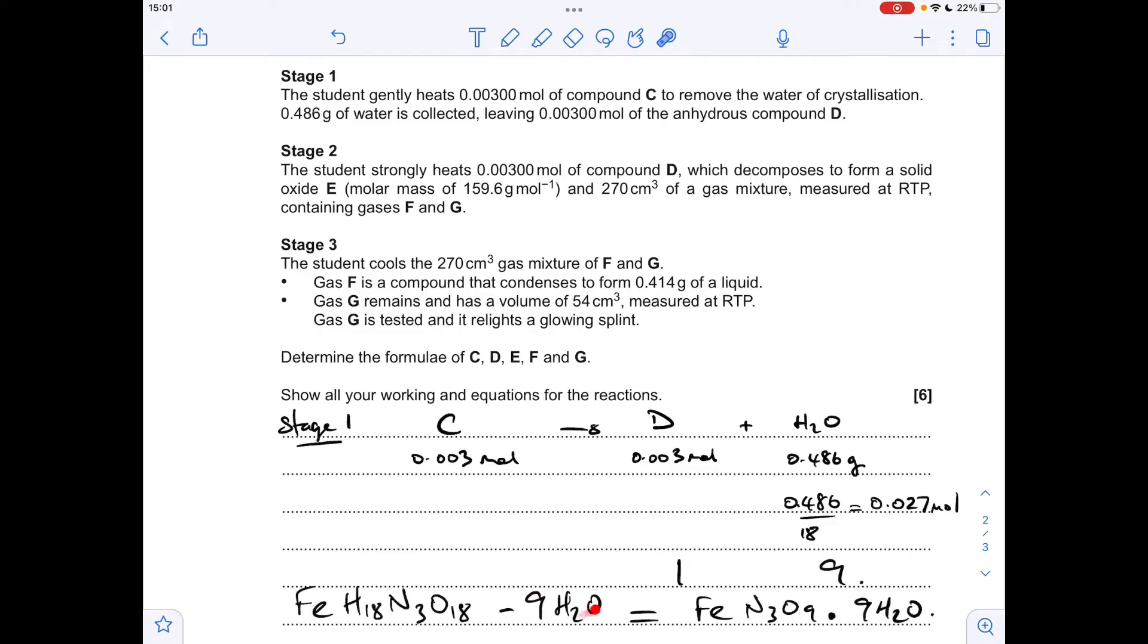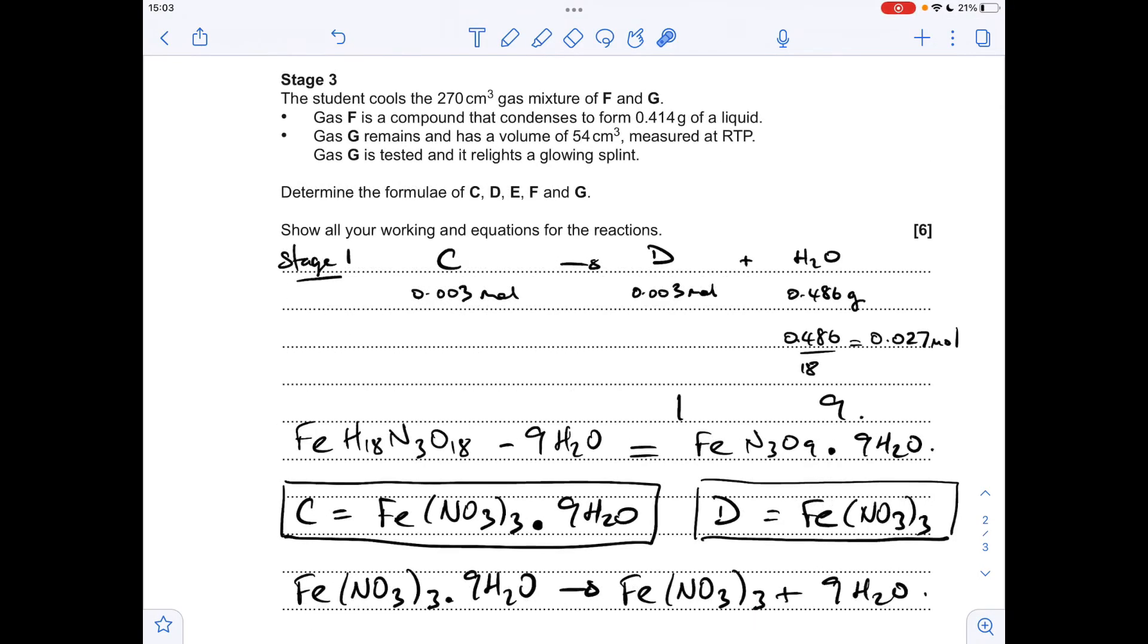So if you take the 18 hydrogens and 9 oxygens that would be present from 9 waters from this, you get that there. And my hunch that it was a nitrate looks right because if it's NO3 three times, we get N3O9. So we've identified C and D, that's the anhydrous product. There's the equation for that reaction.